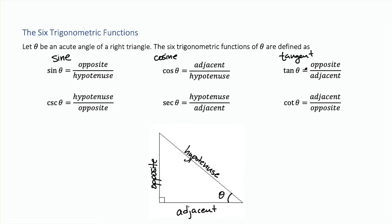If you flip those around, you get the other three functions. The cosecant of an angle is the hypotenuse divided by the opposite — that is just the reciprocal of the sine function. The secant function is the reciprocal of the cosine function, where we take the hypotenuse and divide by the adjacent. And the cotangent is the reciprocal of the tangent function — we take the adjacent side and divide by the opposite.